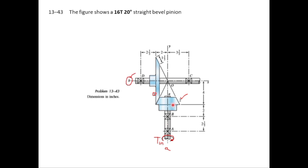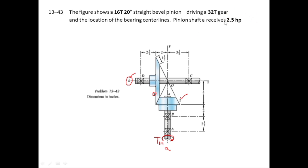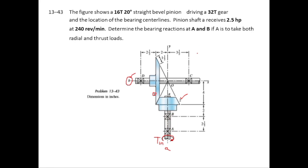In the problem we are given that the pinion has 16 teeth, pressure angle is 20°, and gear 3 has 32 teeth. 2.5 horsepower is received by shaft A from the source and the pinion is rotating at 240 RPM. We need to find the reaction forces at bearing B and bearing A. Bearing A takes both the thrust and radial force.